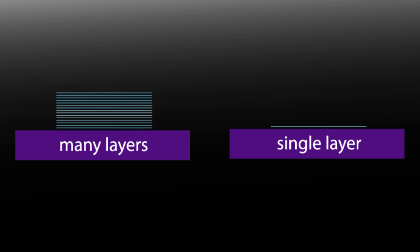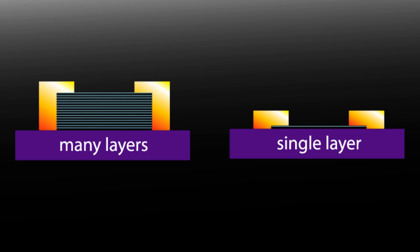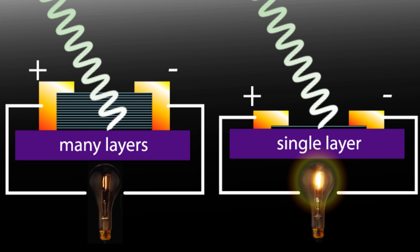In order to measure the photo-generated current, we'll build a basic circuit. First, we'll make some metallic contacts to the edges of the TMD sheets. Then we'll apply a small voltage across the sheets and shine a visible laser on them. When we measure the current generated by the laser in the TMD, the single sheet has a much higher photoresponse than the thick sheet despite being physically less material. This has to do with the change in the electronic structure of the TMD as it gets thinner.